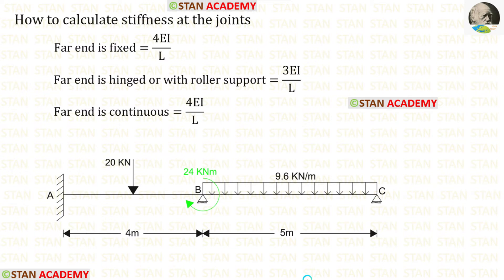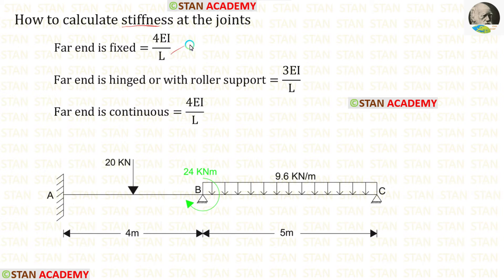In the moment distribution method we have to find the distribution factor, and to find the distribution factor we have to calculate the stiffness. The formulas for stiffness are: if the far end is fixed, the formula is 4EI upon L; if the far end is hinged or roller supported, the formula is 3EI upon L; and if the far end is continuous, the formula is 4EI upon L.